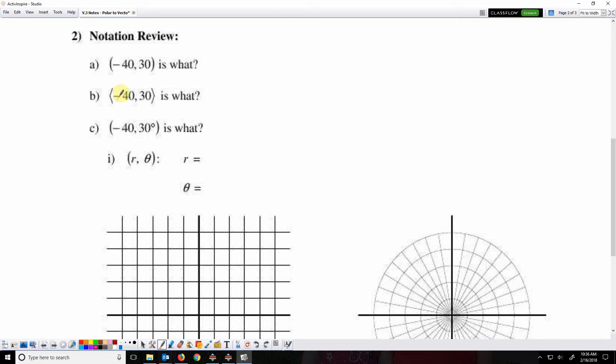Here's a little bit of review of notation. When we see parentheses, comma, a couple numbers there, that's just a coordinate point, an x and y coordinate.